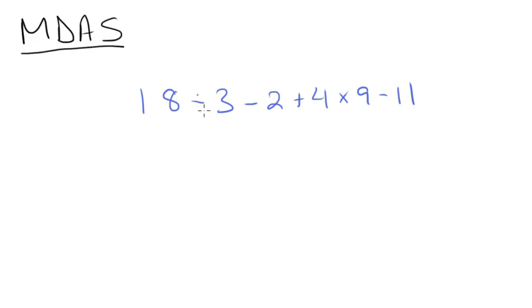So we'll have 6 minus 2 plus 4 times 9 minus 11. Then we're going to multiply 4 by 9. 4 times 9 is 36. So we'll have 6 minus 2 plus 36 minus 11.